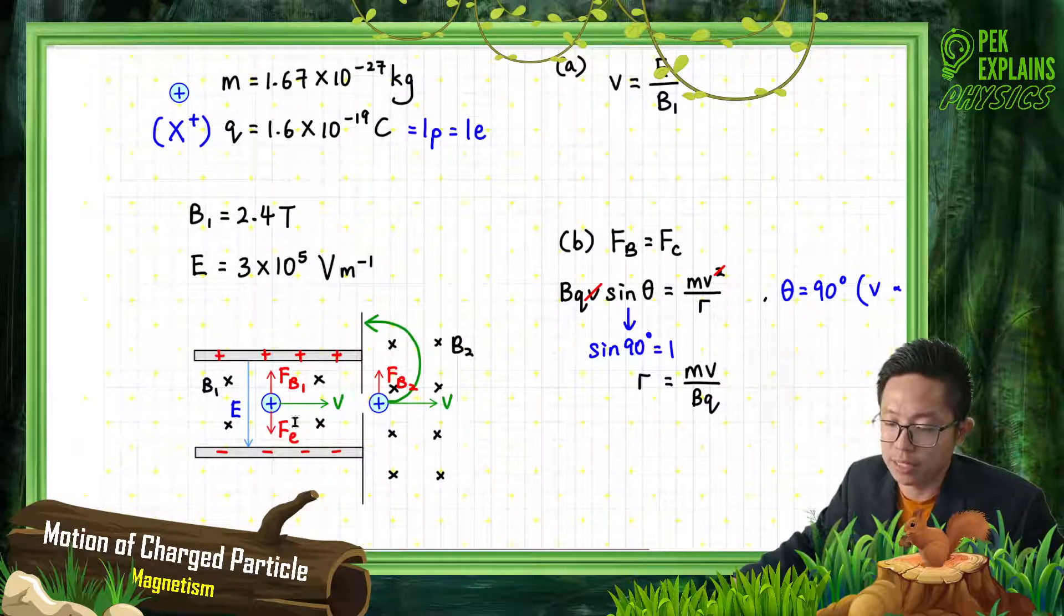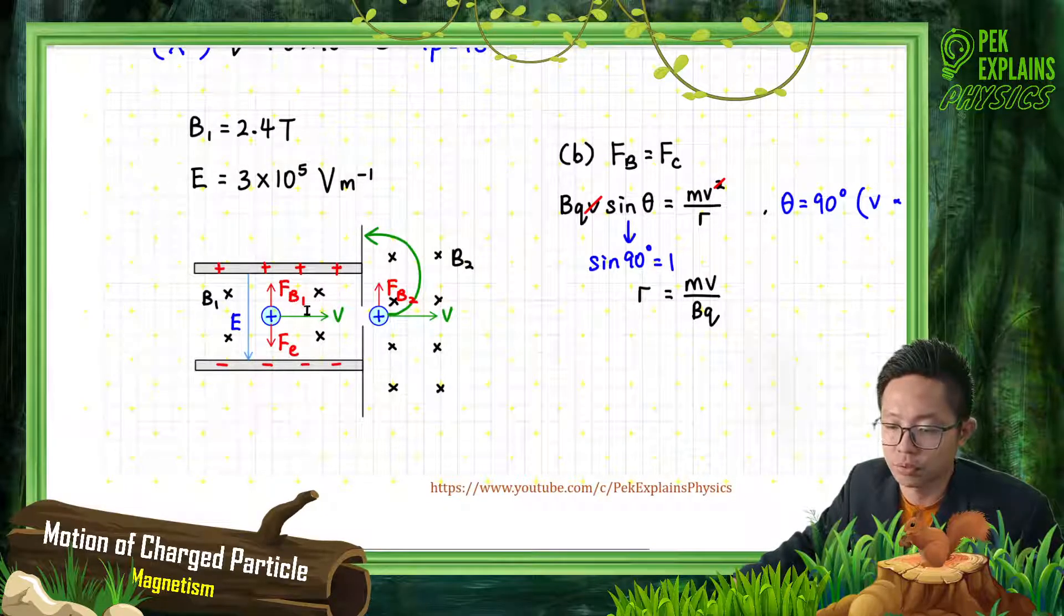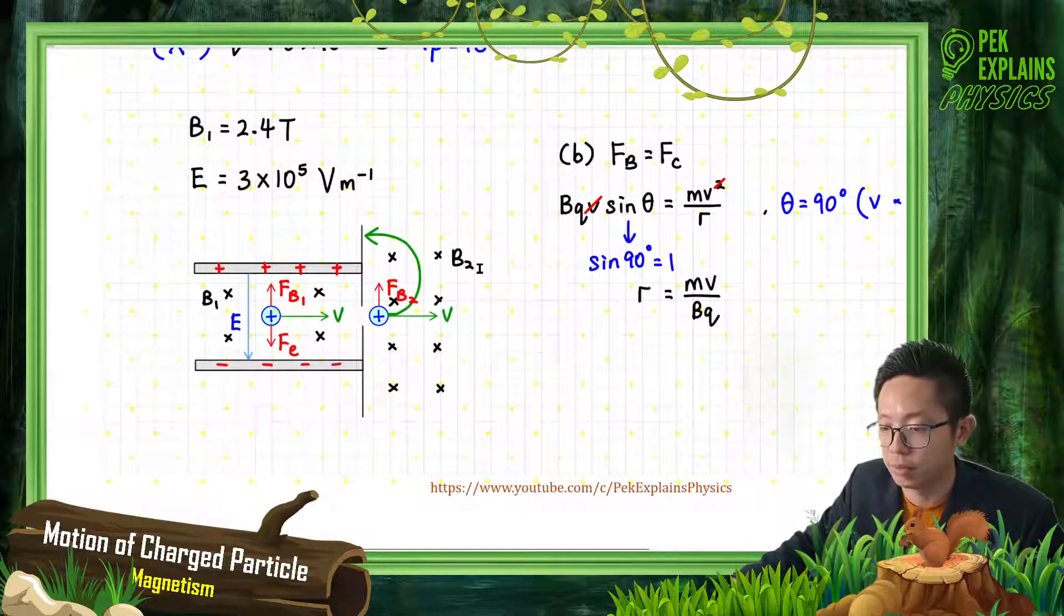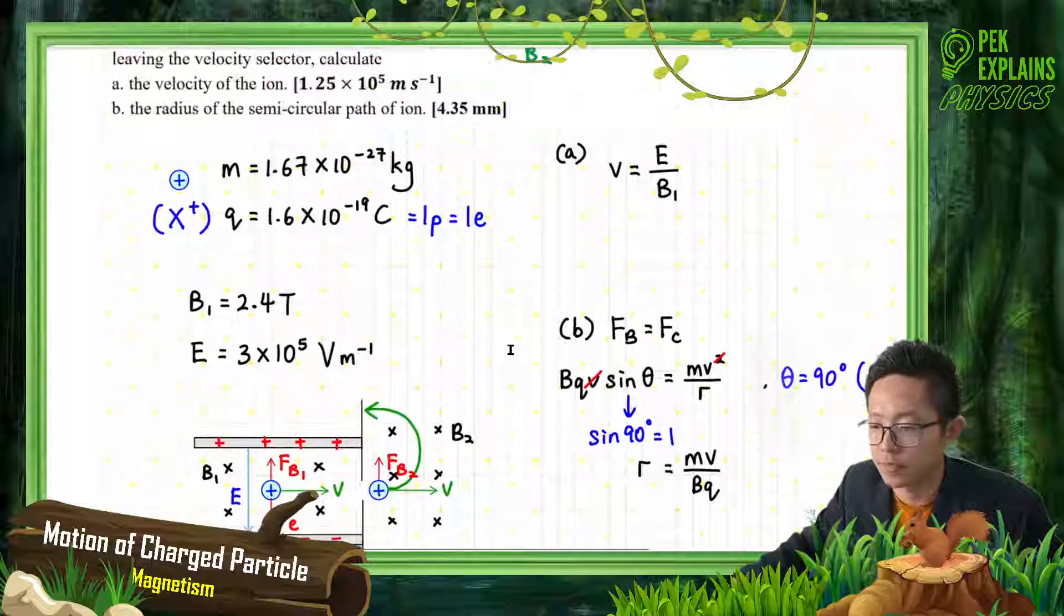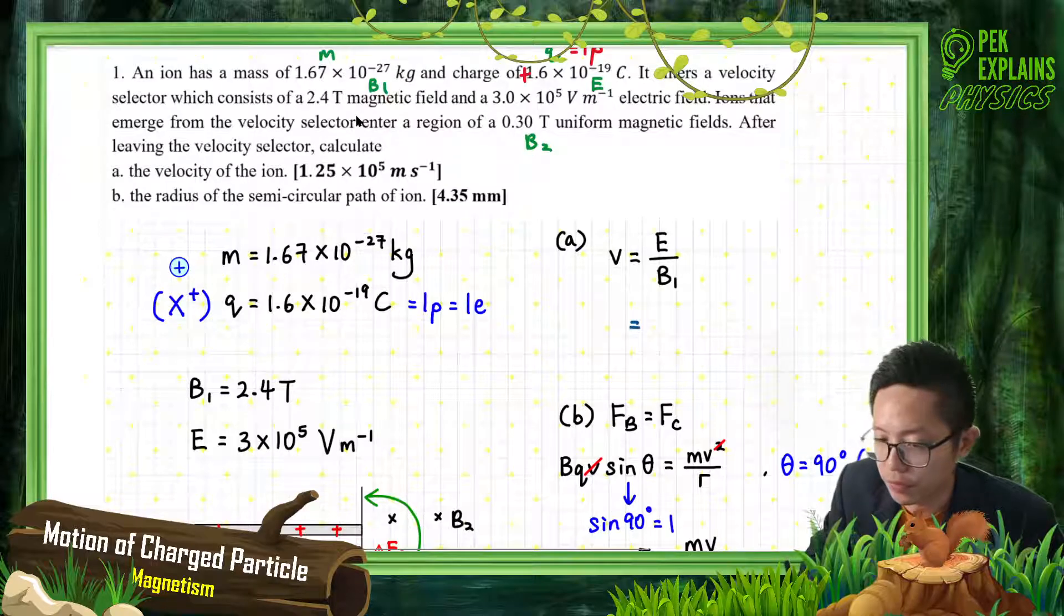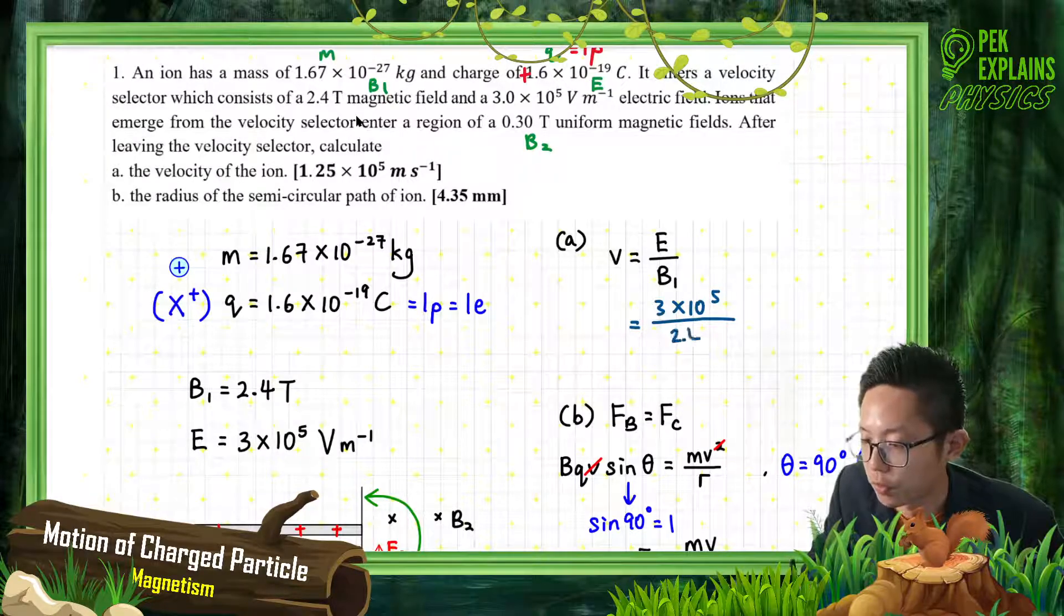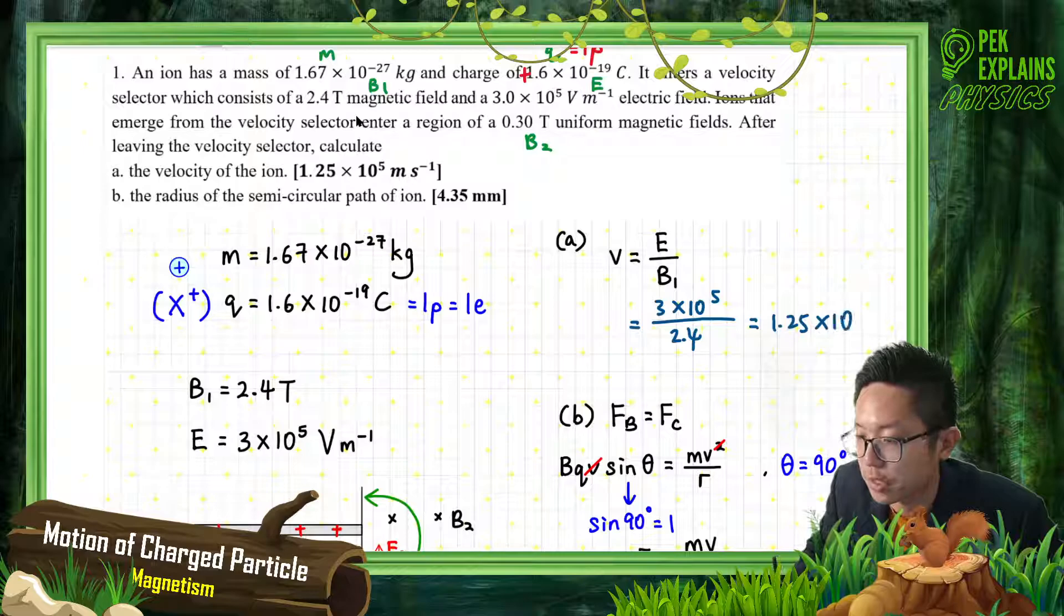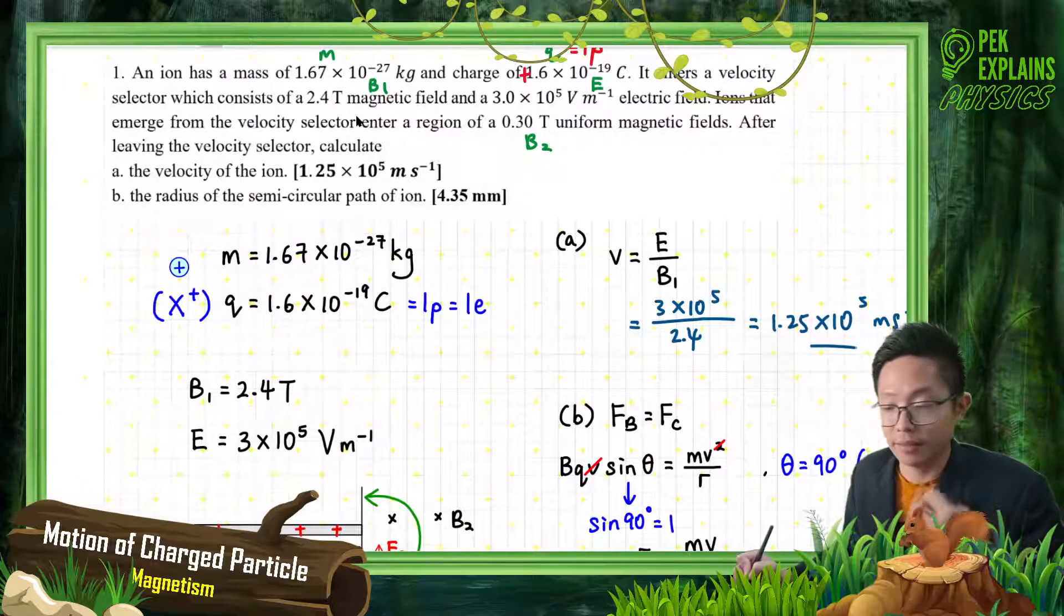Velocity selector has two forces acting: the electric force and magnetic force. This one is magnetic force one, so magnetic force two, because they have different magnetic fields B1 and B2. Let's find out what velocity is being selected. Electric field is 3×10^5 and magnetic field is 2.4 tesla. So the answer is 1.25×10^5 meter per second, that's the velocity being selected.